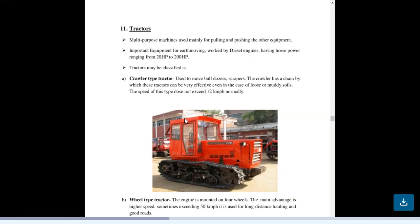This is a multi-purpose machine used mainly for pulling and pushing the other equipment. Important equipment of earth moving work by diesel engine having horsepower ranging from 20 HP to 200 HP.